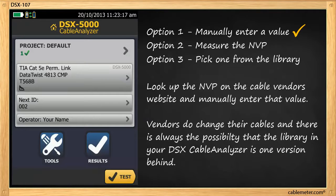So there are three options to setting the MVP. Looking up the MVP on the cable vendor's website and manually entering that value is by far the best method. Vendors do change their cables and there is always the possibility that the library in your DSX is one version behind. Also, if an audit of your results is being conducted, chances are they will use the value from the datasheet, not what you measured.